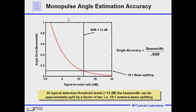How accurately can you make estimates with monopulse angle techniques? The accuracy is the beam width divided by the square root of the signal-to-noise ratio. For a typical signal-to-noise ratio of 13 dB — which is our good detection threshold — that allows us to achieve 10-to-1 beam splitting, meaning we can locate the target to one-tenth of the beam width.